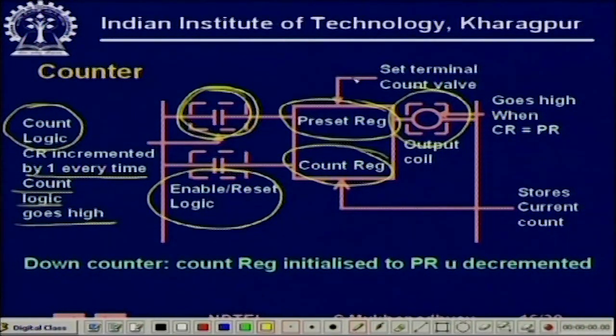In some cases it may be a down counter, in which case the count register may be loaded with the preset register value and it counts down to 0 every time a pulse comes. So it may be an up counter, a down counter, or it may have both up and down count inputs making it an up-down counter.